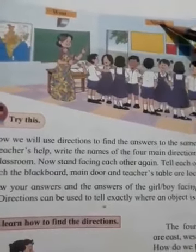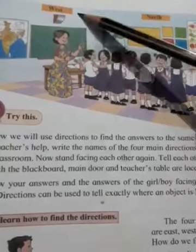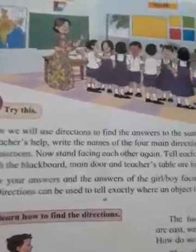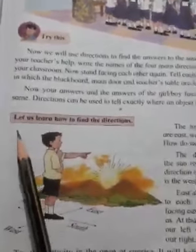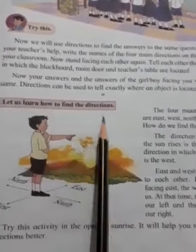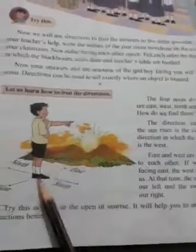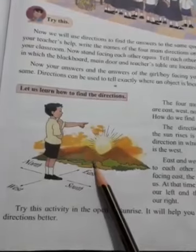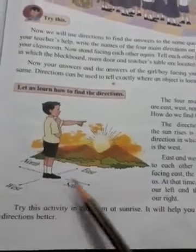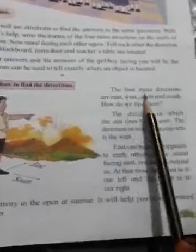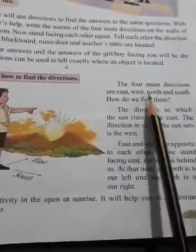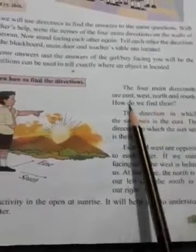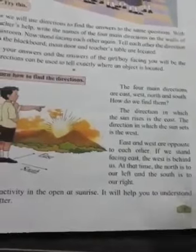So everyone's answers will be the same. Now let us learn how to find directions. You can see a boy — in front of the boy is East, behind him is West, to his left is North, and to his right is South. So the four main directions are East, West, North, and South. But how do we know where East is, where West is, where North is, and where South is?